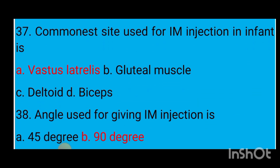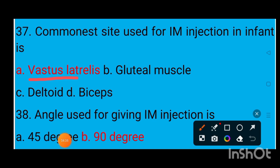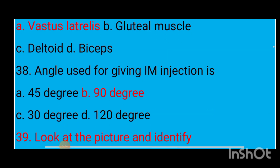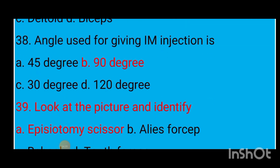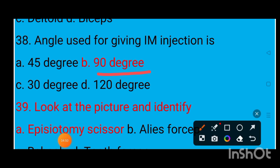Question number 37: The commonest site used for IM injection for infants is option A vastus lateralis, option B gluteal muscle, option C deltoid, option D biceps. The correct answer is option A — vastus lateralis. Question number 38: The angle used for giving an IM injection is option A 45 degrees, option B 90 degrees, option C 30 degrees, option D 120 degrees. The correct answer is option B — 90 degrees.